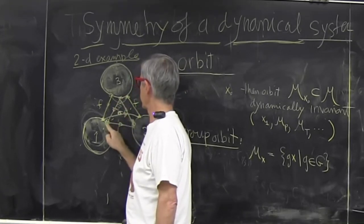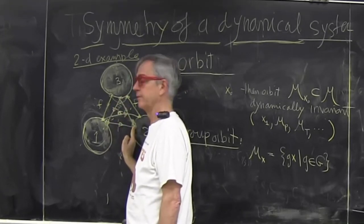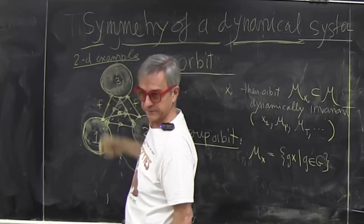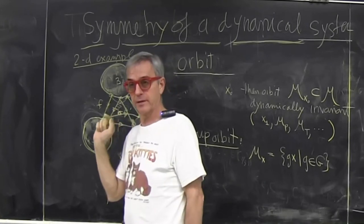E keeps it where it is. Sigma moves it. And rotation actually also moves it. So the group orbit is just three points.